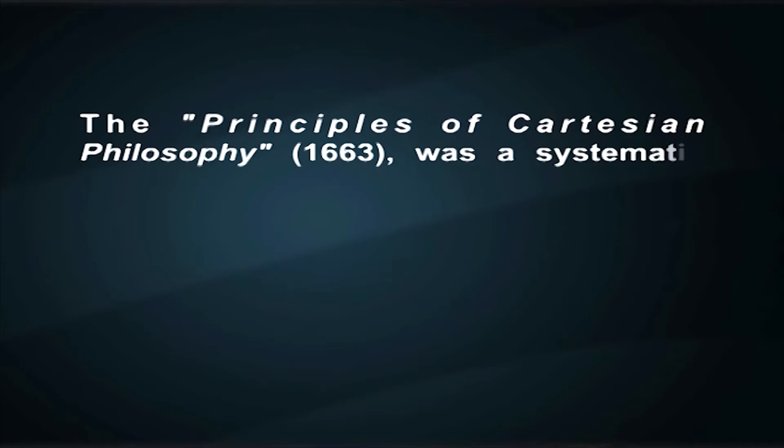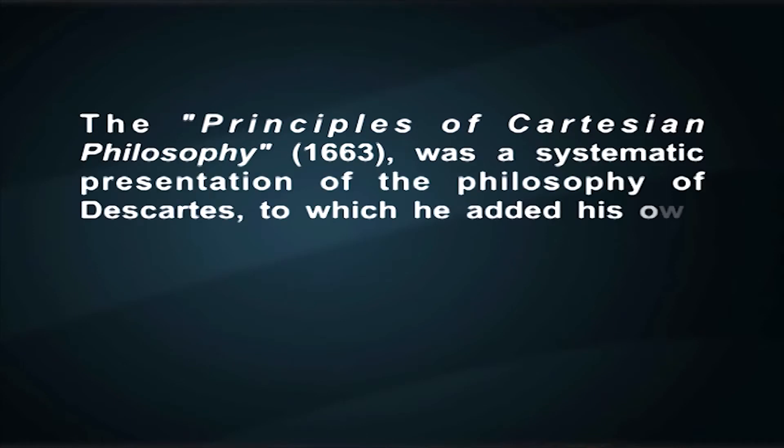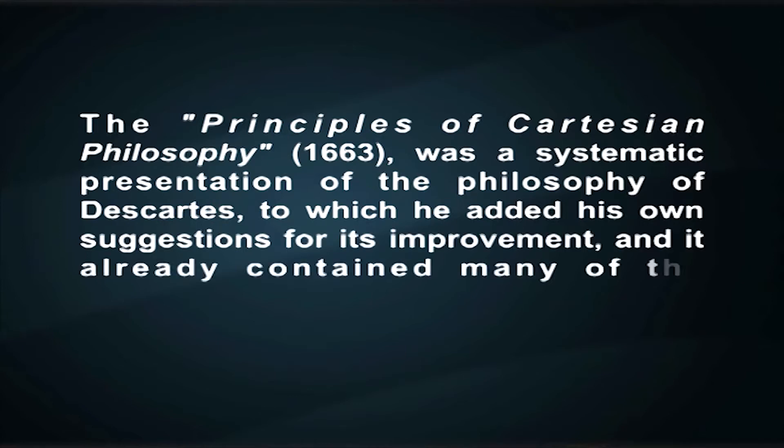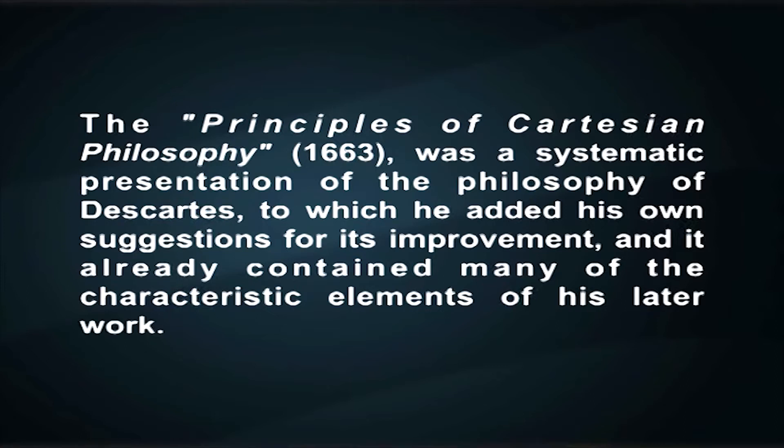Although Spinoza is usually counted, along with Descartes and Leibniz, as one of the three major rationalists of the 17th century, his writings reveal the influence of such divergent sources as Stoicism, Jewish Rationalism, Machiavelli, Hobbes, Descartes, and a variety of heterodox religious thinkers of his day, and he made significant contributions in virtually every area of philosophy. His pursuits were eclectic, and his thought was strikingly original, which makes him somewhat difficult to categorize. His first published work, The Principles of Cartesian Philosophy in 1663, was a systematic presentation of the philosophy of Descartes, to which he added his own suggestions for its improvement, and it already contained many of the characteristic elements of his later work.